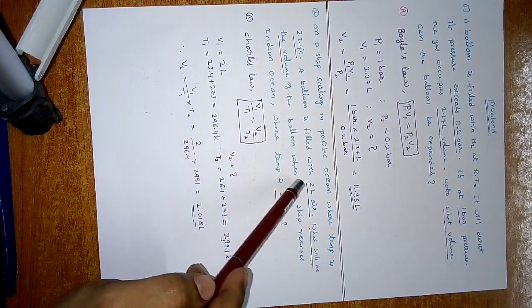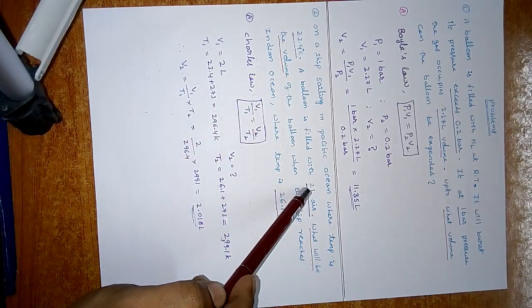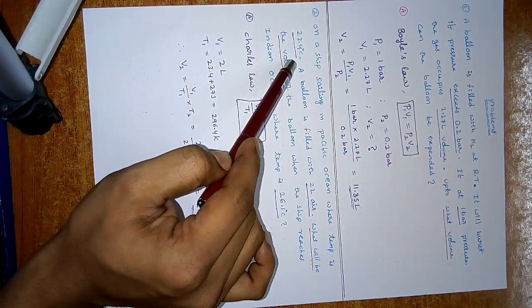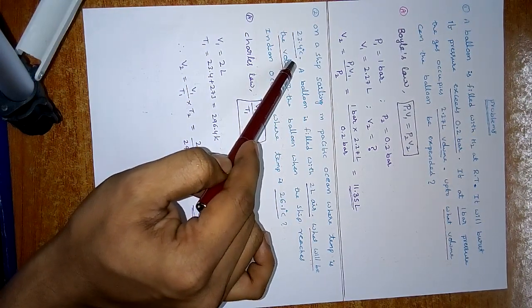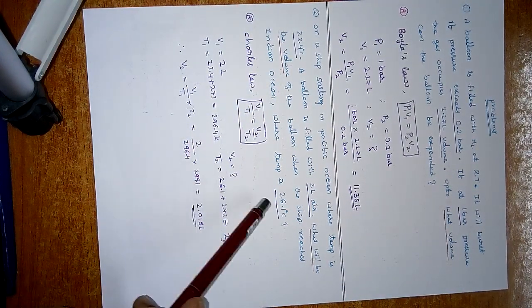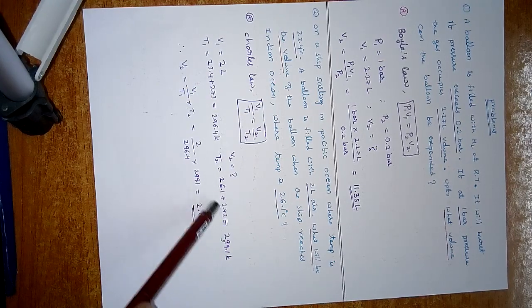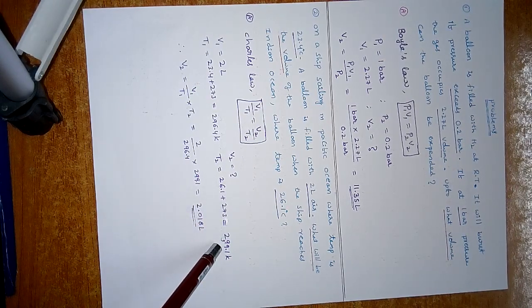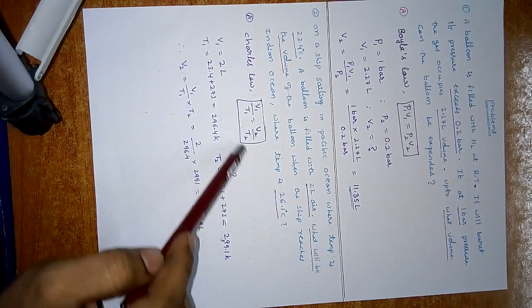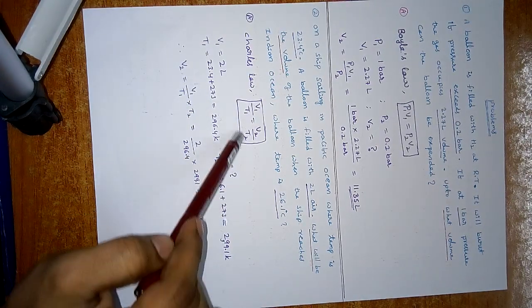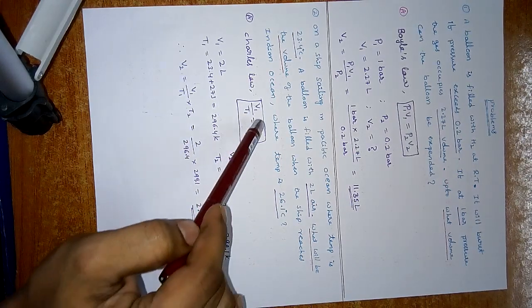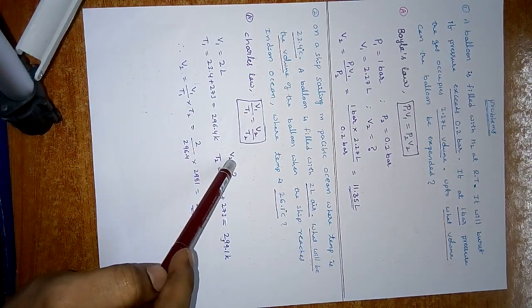Here V1 = 2 litres, and T1 = 23.4°C, but we should take it in Kelvins, that is 293.4 K. T2 = 26.1°C, which is 299 K. Same as Boyle's law, we know every term except V2. So if you substitute these three terms, we can get the V2 value.